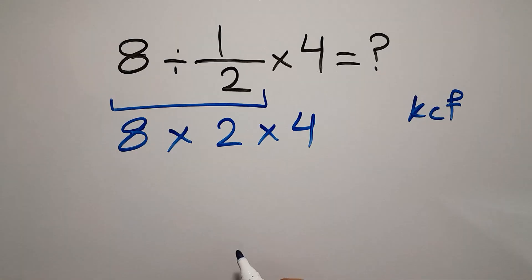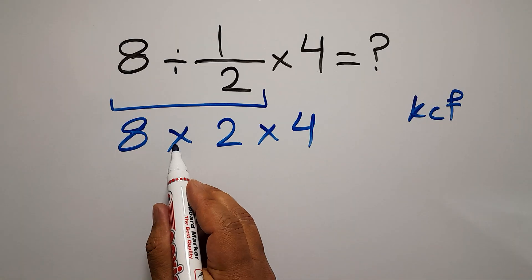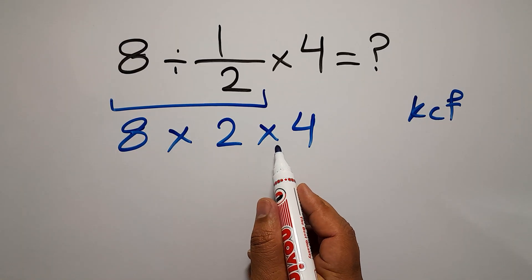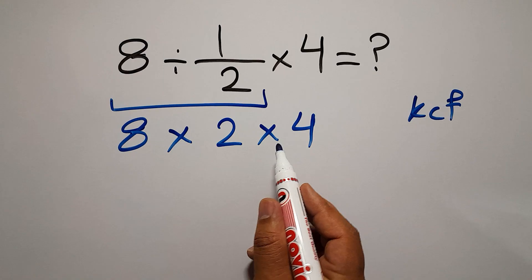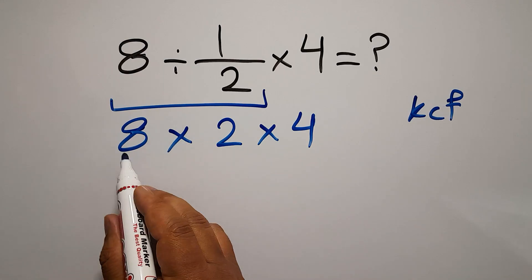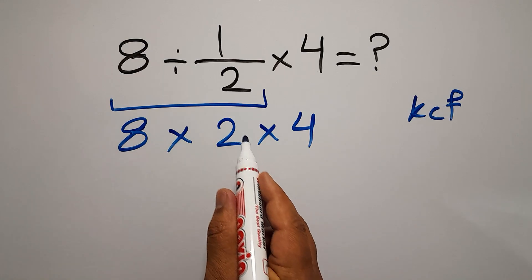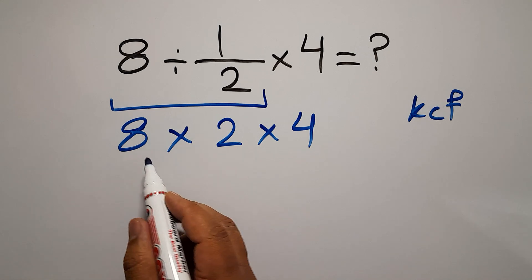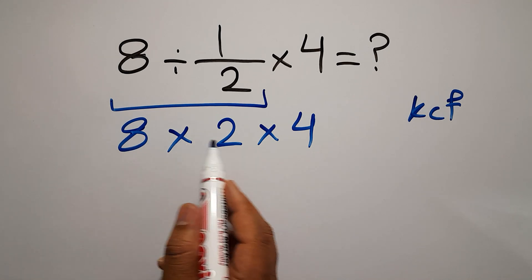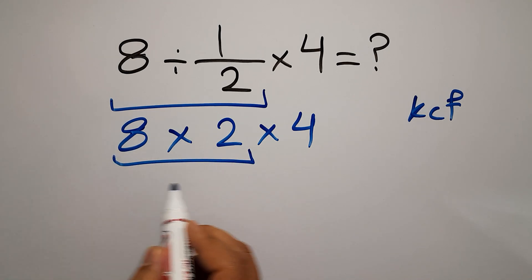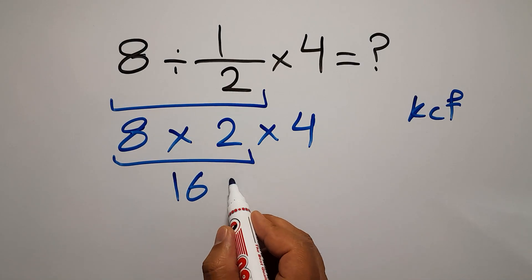Now we have two multiplications. When we have more than one multiplication in one expression we have to work from left to right. So first this multiplication: 8 times 2 gives us 16, then 16 times 4.